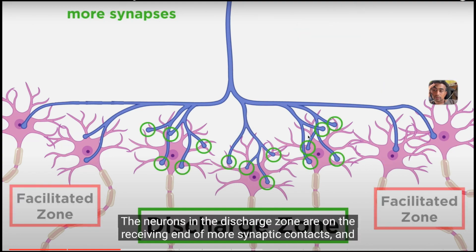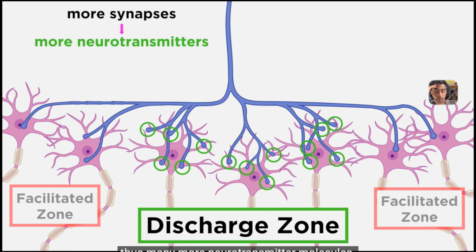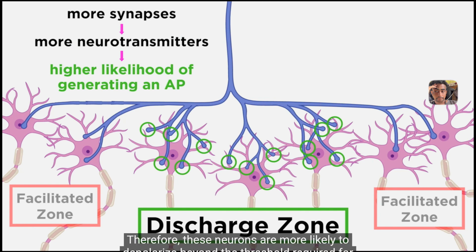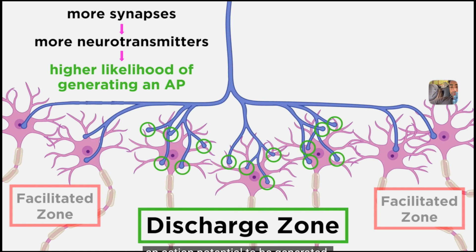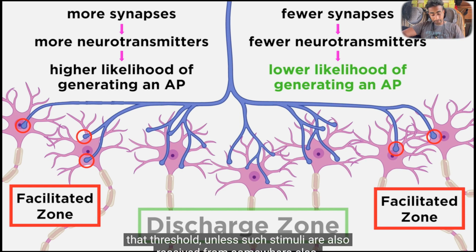The neurons in the discharge zone are on the receiving end of more synaptic contacts and thus many more neurotransmitter molecules — therefore these neurons are more likely to depolarize beyond the threshold required for an action potential. The neurons in the facilitated zone will depolarize to an extent but are less likely to reach that threshold unless stimuli are also received from somewhere else.